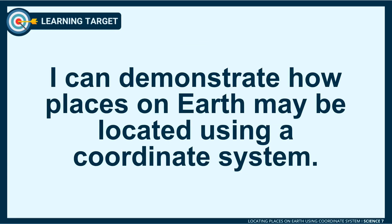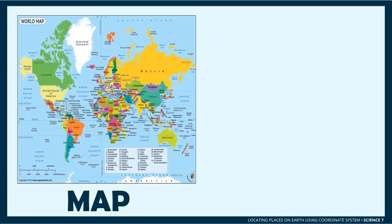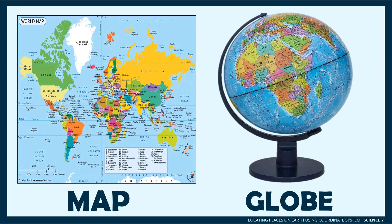At the end of this video, you should be able to demonstrate how places on earth may be located using a coordinate system. Before the utilization of coordinates had been introduced, people in the old times used maps and globes to locate places on earth.